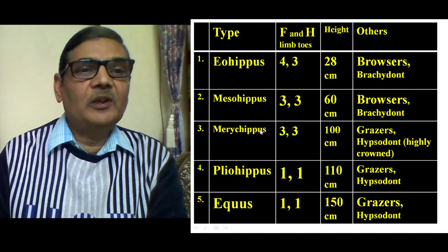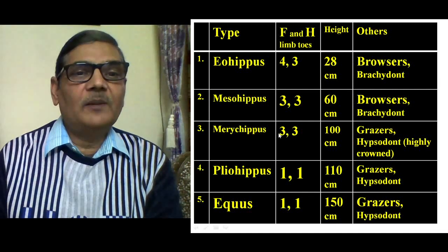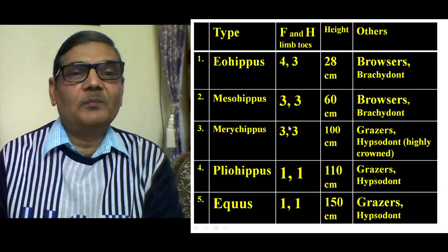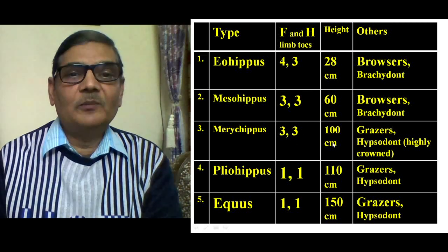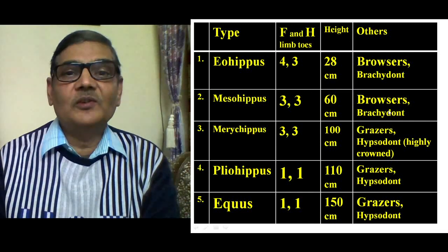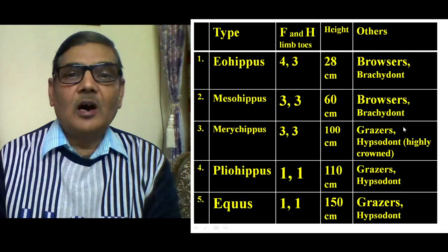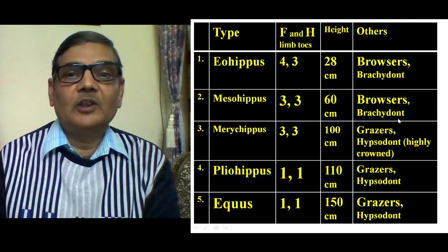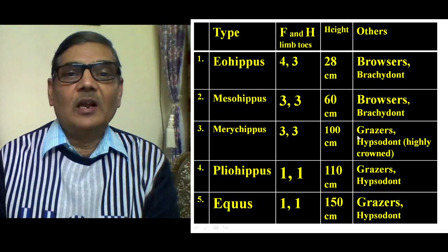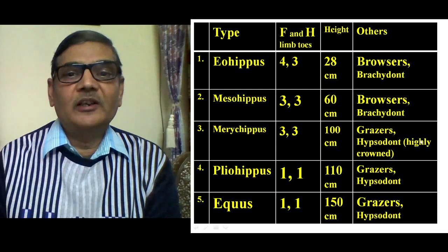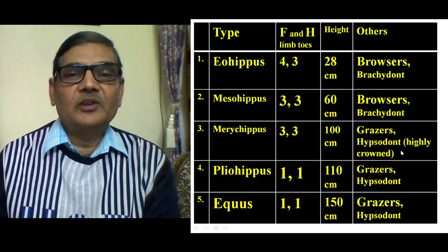The third type, Merychippus, also possessed three toes in both forelimbs and hind limbs, but the second and fourth toes were much reduced compared to those in Mesohippus. Their size was 100 cm. They were grazers, found mainly in grasslands, adapted to feed on harder vegetation. They came outside the forest and started grazing in open grass, and so possessed hypsodont teeth — highly crowned teeth with good enamel deposition.